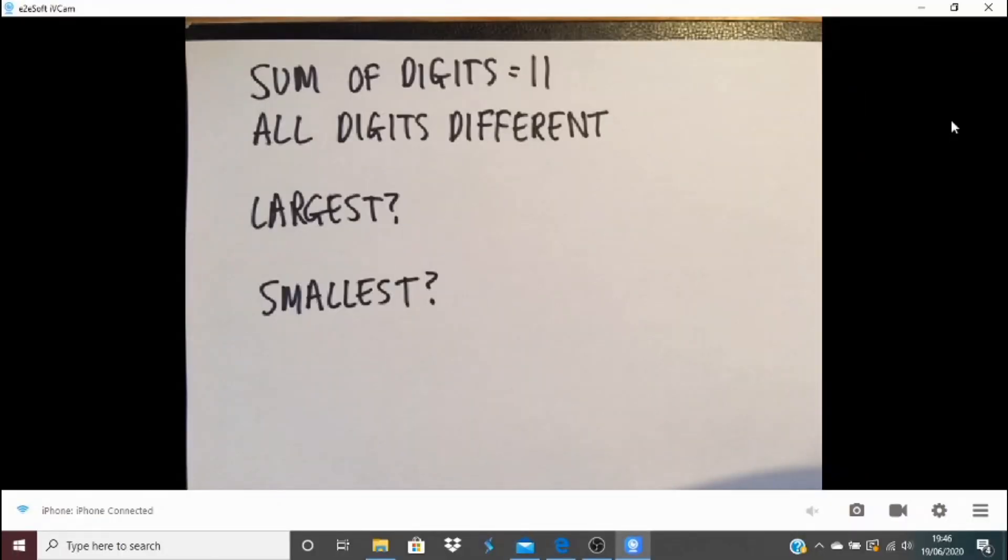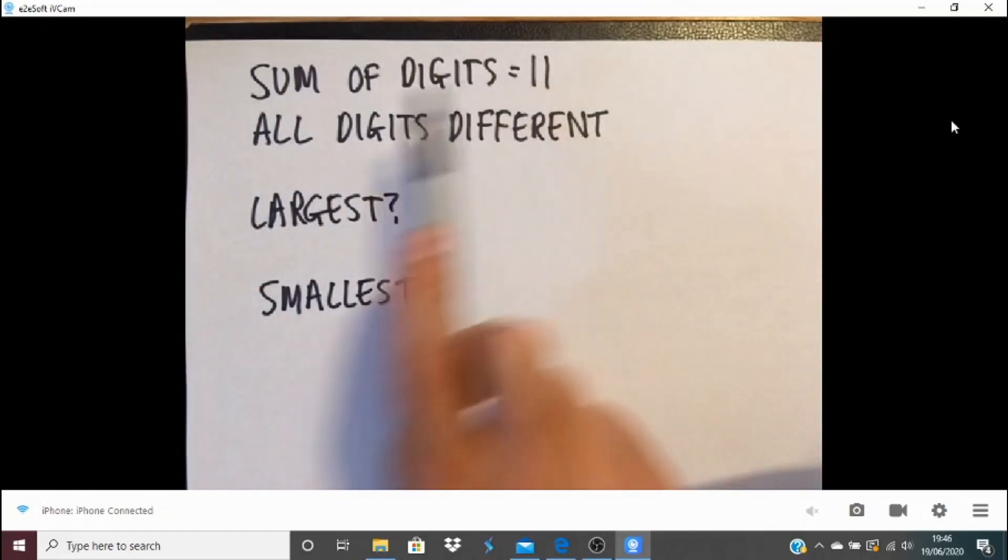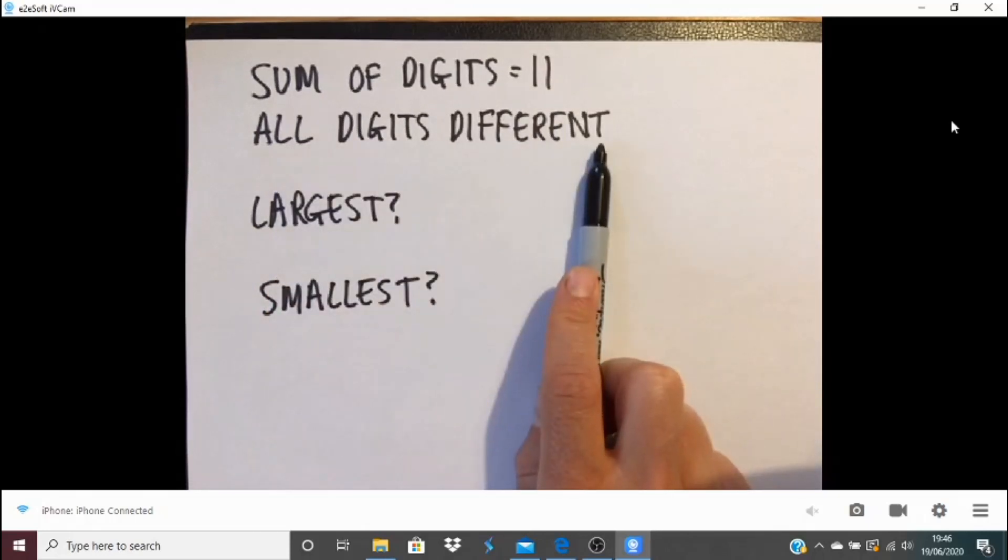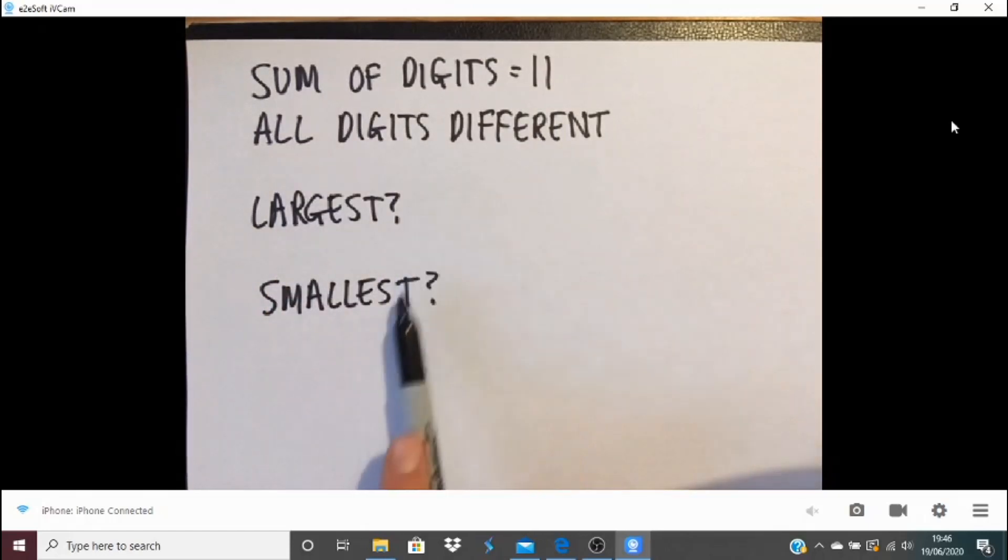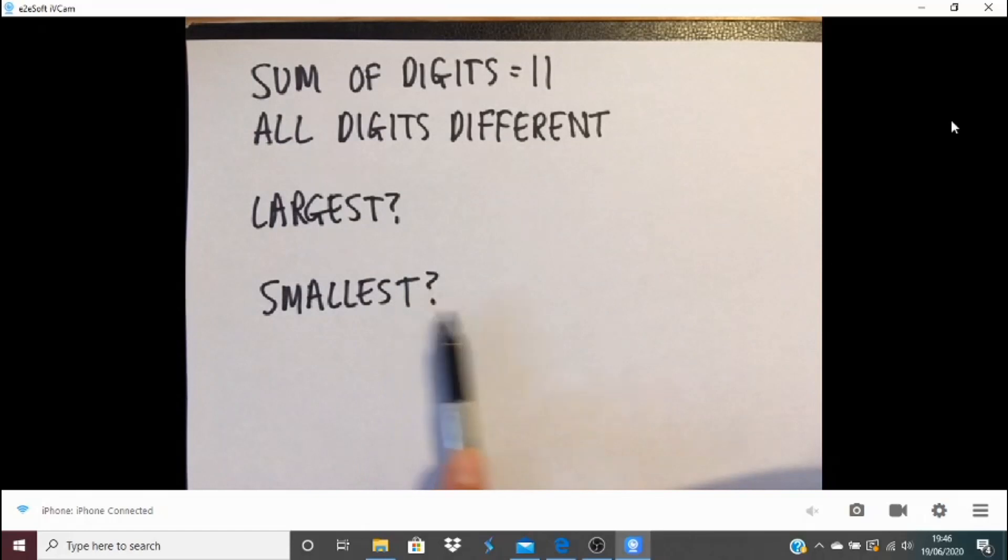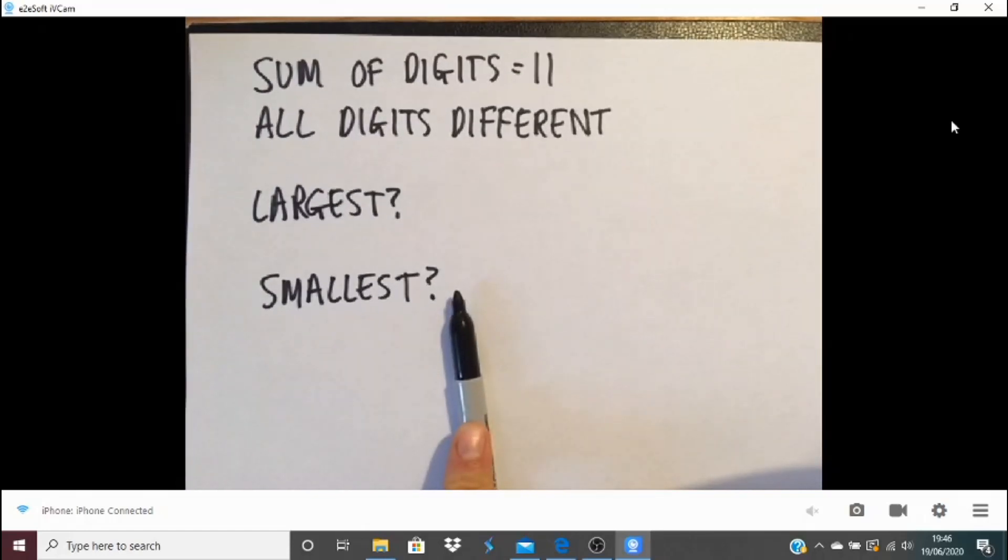Well, let's start today by looking at yesterday's Extend task, which was this. The sum of the digits for a number is 11. All the digits are different. What's the largest the number could be? What's the smallest the number can be? Well, I'm going to start with thinking, what's the smallest the number could be? And to get the number that's as small as possible, well, first of all, I'm going to go for a two-digit number, because if the sum of the digits is 11, I couldn't do that with a single-digit number, of course.